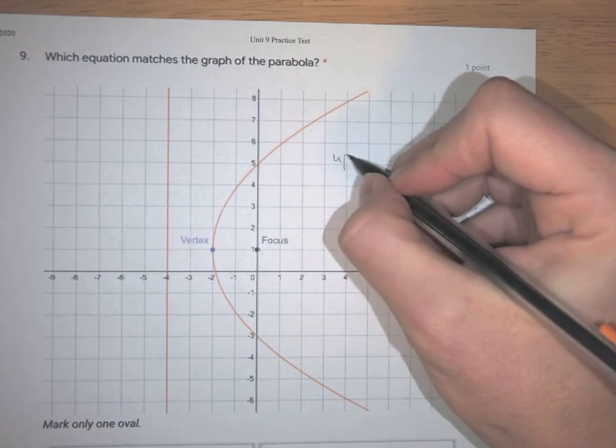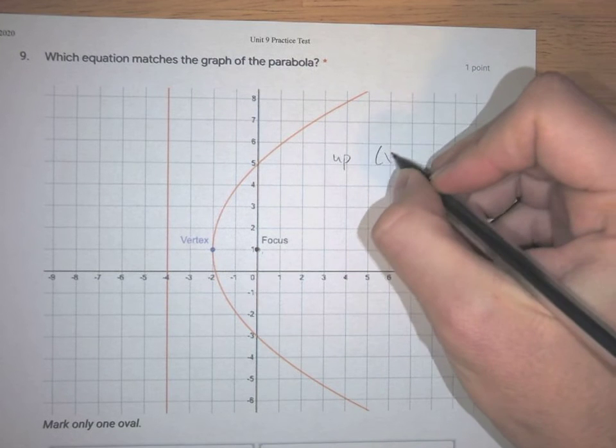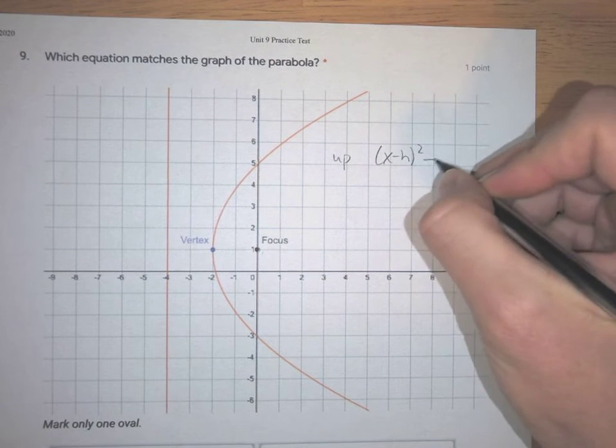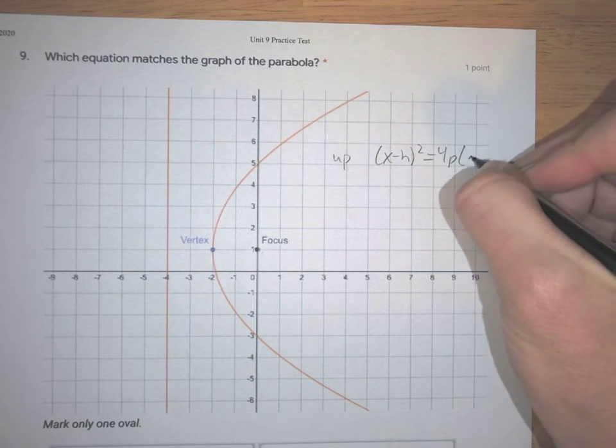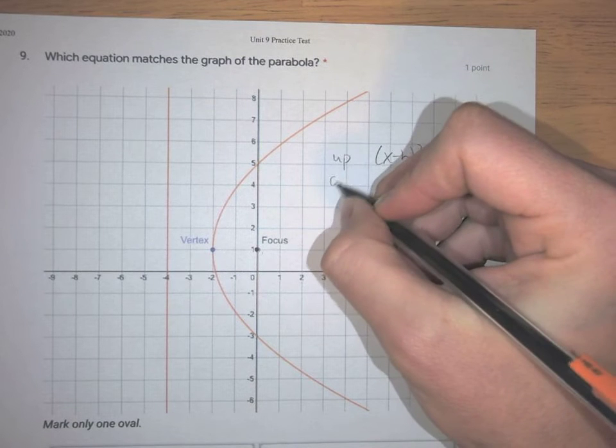We have our up version, which is (x-h)² = 4p(y-k). We have our down version, which is (x-h)² = -4p(y-k).